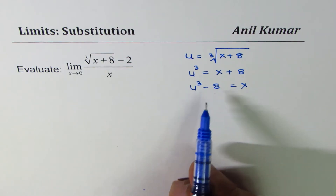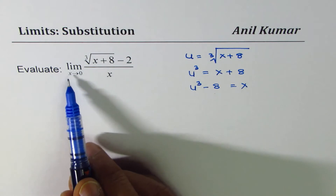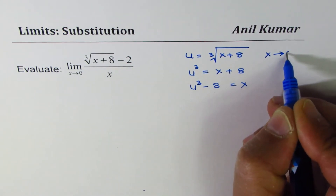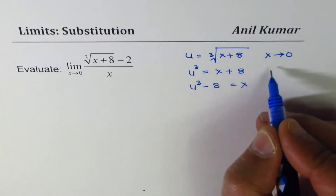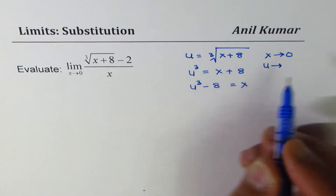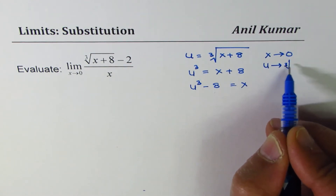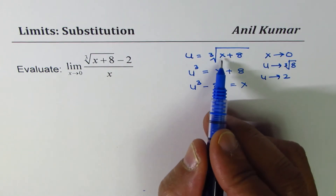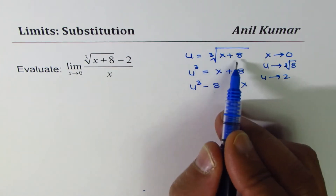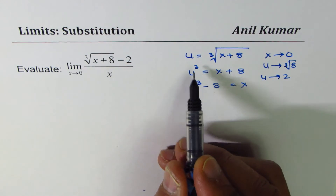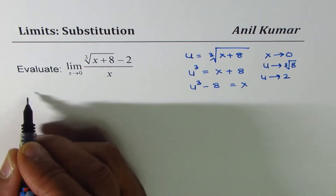Note that 8 is 2 cubed. The second part is converting the limit: x approaching 0. When x approaches 0, what happens to u? Replacing x with 0, we get cube root of 8, so u approaches 2. So we're ready to substitute x with the new variable u.